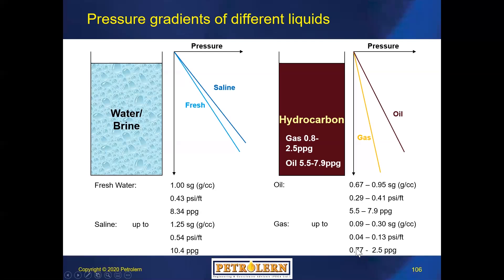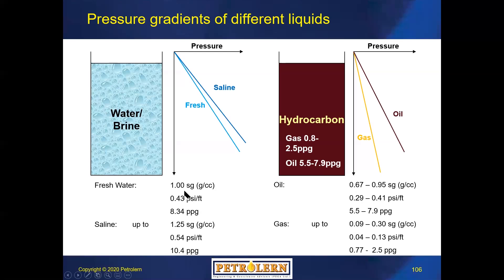Water is heavier than oil, and oil is heavier than gas. So if you profile the pressure in different fluids, you get pore pressure profiles with different gradients. This is a way to find gas-oil contacts or oil-water contacts. These are all normal pore pressures but for different fluids with different densities.